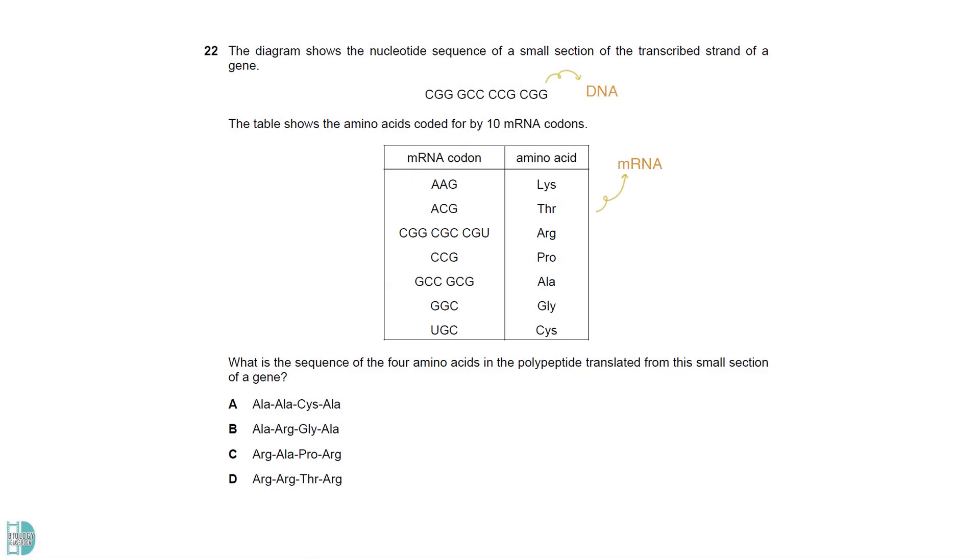The sequence belongs to a DNA molecule, while the table shows codons in mRNA. Therefore, you must first determine the complementary sequence of the gene. Then, you can use the table to find the amino acids it codes for.